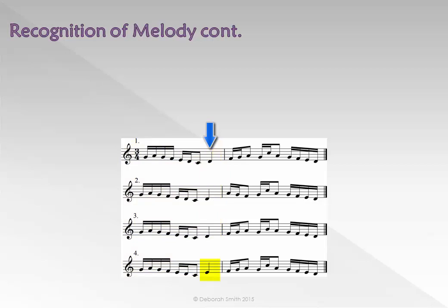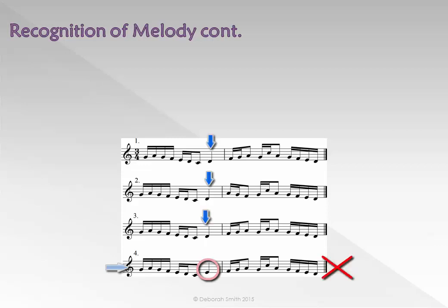However, the last beat of the fourth example is Me, or E. Therefore, I will begin my listening at 4. I will circle the note that is different. If I hear it go up to Me, then I know it must be 4. If I hear it only go up as far as Ray, then I know it cannot be 4, and can only be 1, 2, or 3.